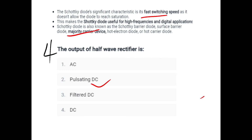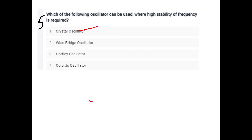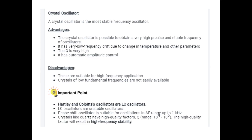The output of a half-wave rectifier is pulsating DC. The oscillator that is used where high stability of frequency is required is the crystal oscillator. Crystal oscillators are the most stable oscillators. Their advantages include very high precise and stable frequency output, high Q factor, and automatic amplitude control. Disadvantages: suitable only for high frequency applications and crystal elements are not easily available. For comparison: Colpitts and LC oscillators are less stable. Crystals have a high quality factor and high frequency stability, with a range of 10⁴ to 10⁶.